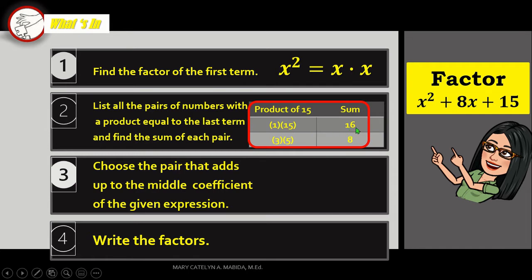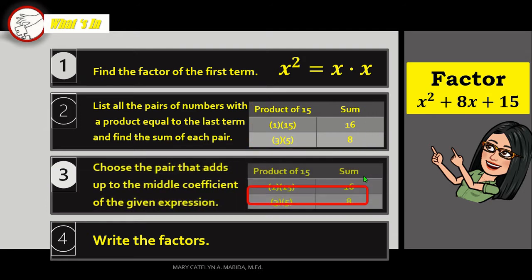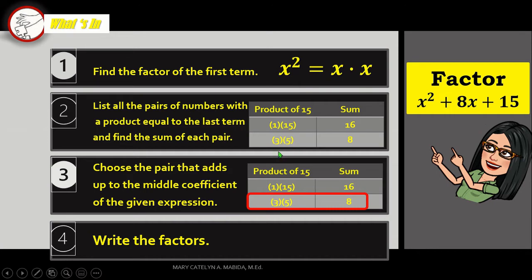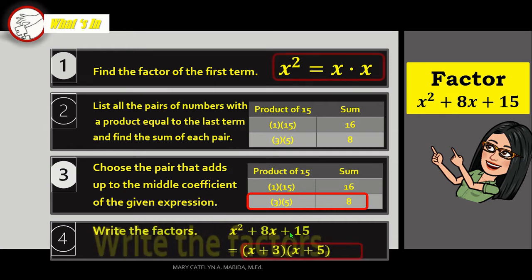1 plus 15 is 16, 3 plus 5 is 8. Step 3: Choose the pair that adds up to the middle coefficient, which is 8, of this expression, and that is 3 plus 5 equals 8, and then we write the factors.